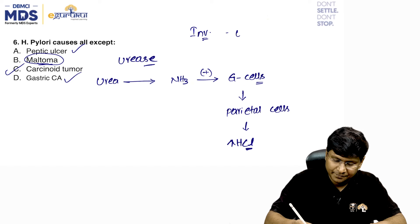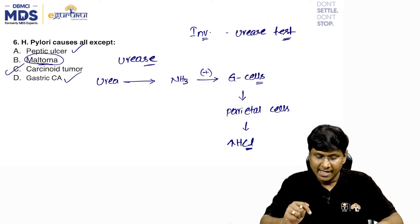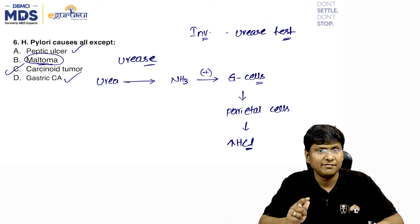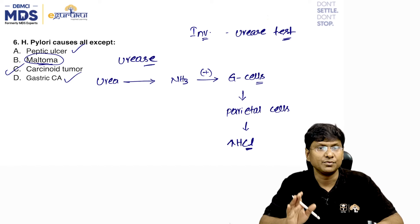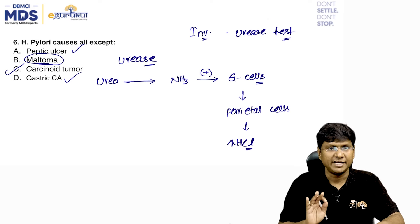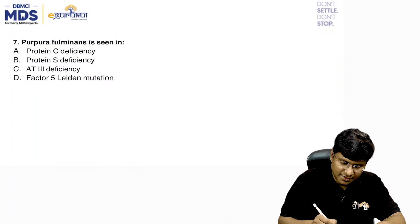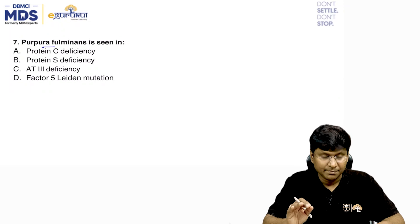The urea breath test is used for eradication of H. pylori infection, and ELISA is used for screening. That concludes the discussion on H. pylori.